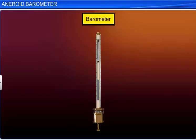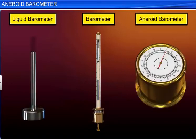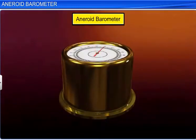A barometer is an instrument used to measure atmospheric pressure. Barometers can be broadly classified into two types: liquid barometers and aneroid barometers. The word aneroid means without liquid. The aneroid barometer is so named because it does not use any liquid.